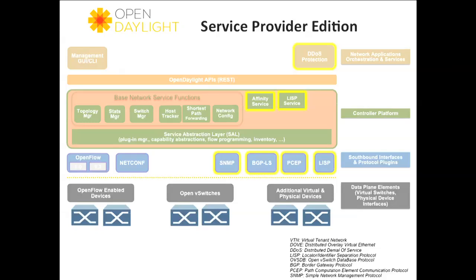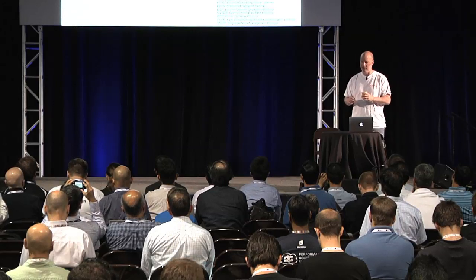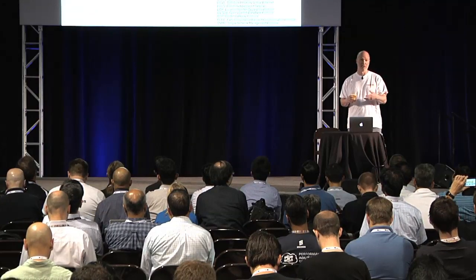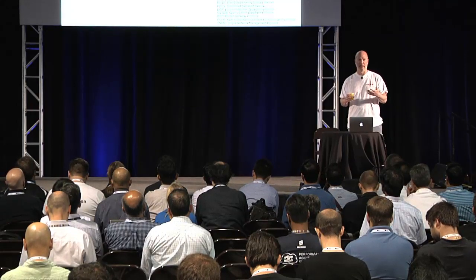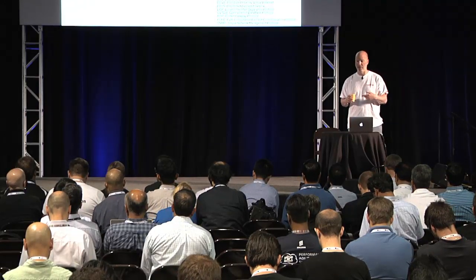What did the Service Provider edition add? Inside the controller — by the way, the controller is written in Java and uses OSGI extensively — where you see the Affinity Service and LISP Service outlined in yellow inside the controller, that's where they added OSGI bundles to give the controller additional functionality. It would be like a KLM except OSGI in this case. So we added the Affinity Service and the LISP Service, both adding functionality to the controller through OSGI bundles. On the southbound we had SNMP, BGP-LS, PCEP, and LISP. And then above that, the DDoS protection from Defense for All.